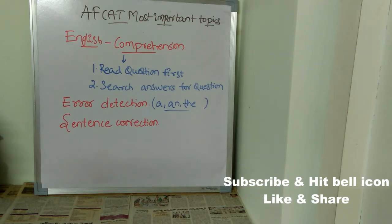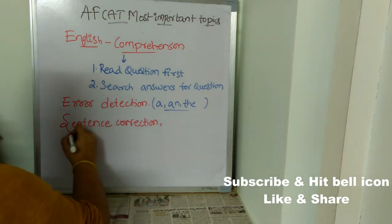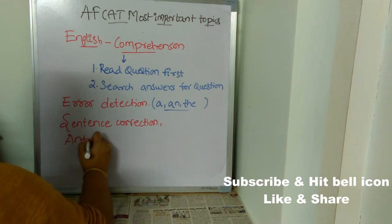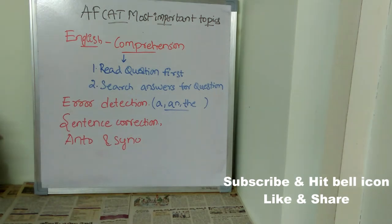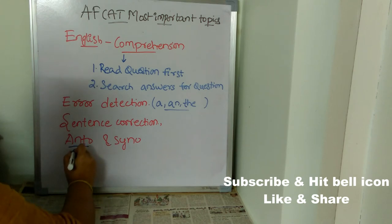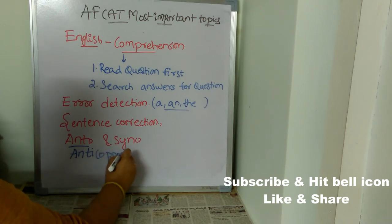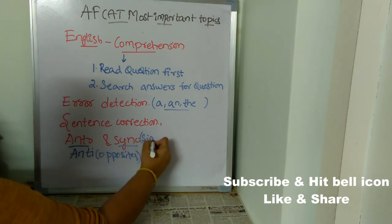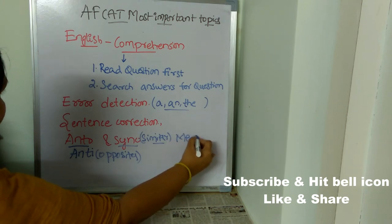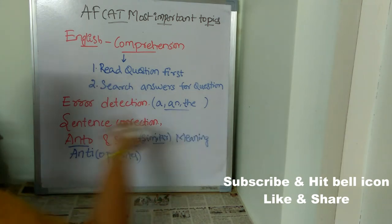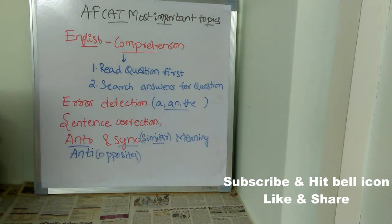The next important topic is antonyms and synonyms. Most students are confused between the two. The word 'antonyms' contains 'anti', which means opposite — so antonyms means opposite. For synonyms, remember it as 'similar' — synonyms means similar meaning. Logically remember what is meant by antonyms and synonyms.